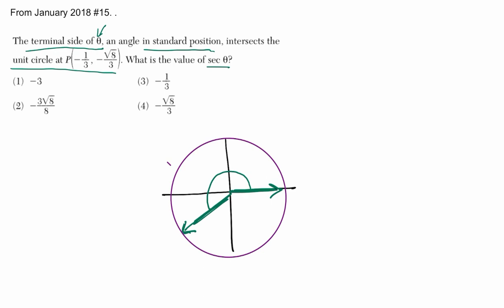And it's saying that the terminal point here, which is negative one-third and negative square root of 8 over 3, right? That's the point where the angle meets the circle, and the radius is 1.